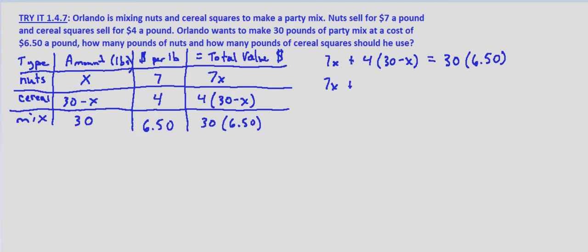equals our 30 pounds of party mix, times $6.50 per pound. So we distribute the 4, 7x plus 120 minus 4x equals 30 times $6.50 is $195. Combine like terms,